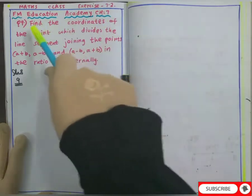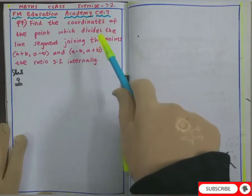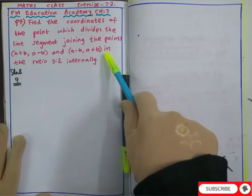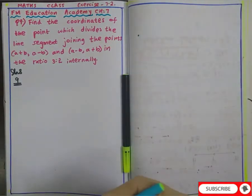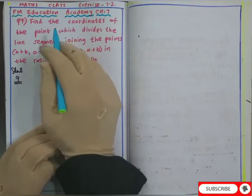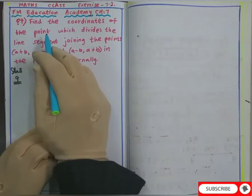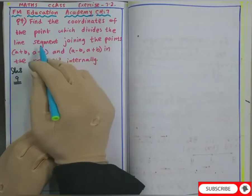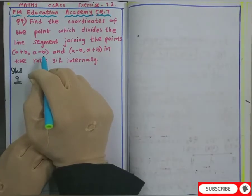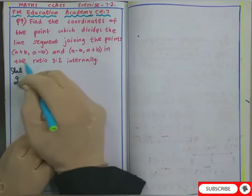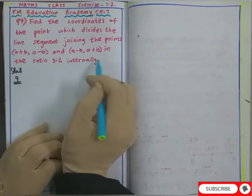This question is question number 9 and this concept is also used in CBSE, SSE and ICSE. The question asks: find the coordinates of the point which divides the line segment joining the points (a+b, a-b) and (a-b, a+b) in the ratio 3:2 internally.